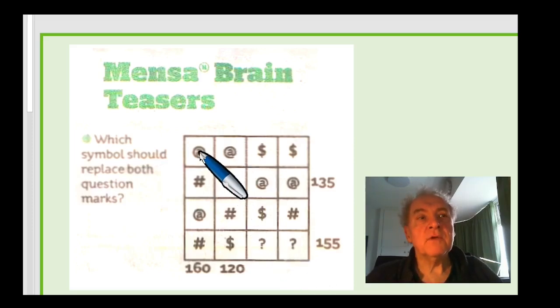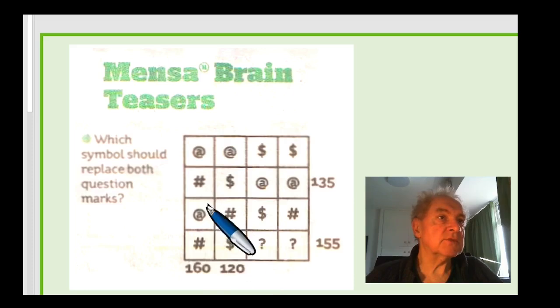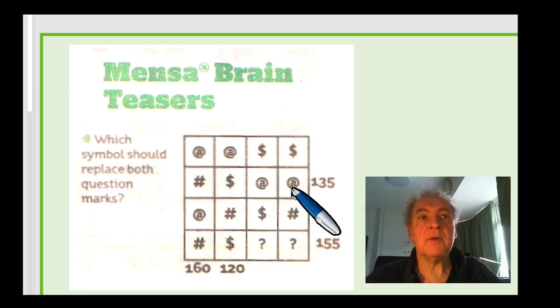So what you've got is columns which add up. You've got an at symbol plus a hash symbol plus an at symbol plus a hash symbol equals 160. An at symbol plus a dollar symbol plus a hash symbol plus another dollar symbol equals 120. And you've got another equation going this way. A hash symbol plus a dollar symbol plus an at symbol plus another at symbol equals 135.